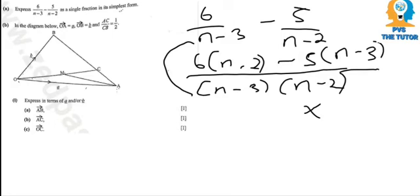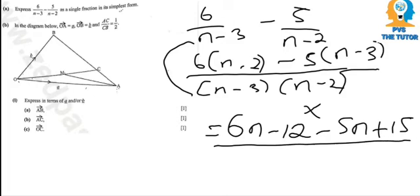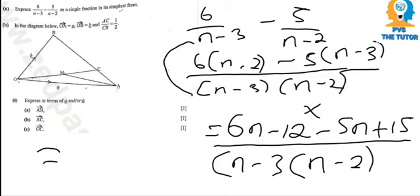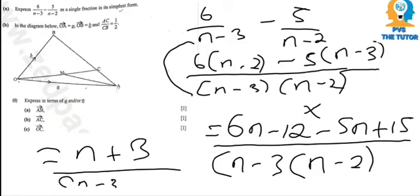So next now we expand: 6 times n times negative 2. That is 6n minus 12. Then we expand, that is negative 5n plus 15 over n minus 3, n minus 2. So when you collect the like terms, 6n and negative 5n is going to give you n, the negative 12 and positive 15 to give you positive 3 over n minus 3, n minus 2. So that's how you can solve that one as a single fraction.